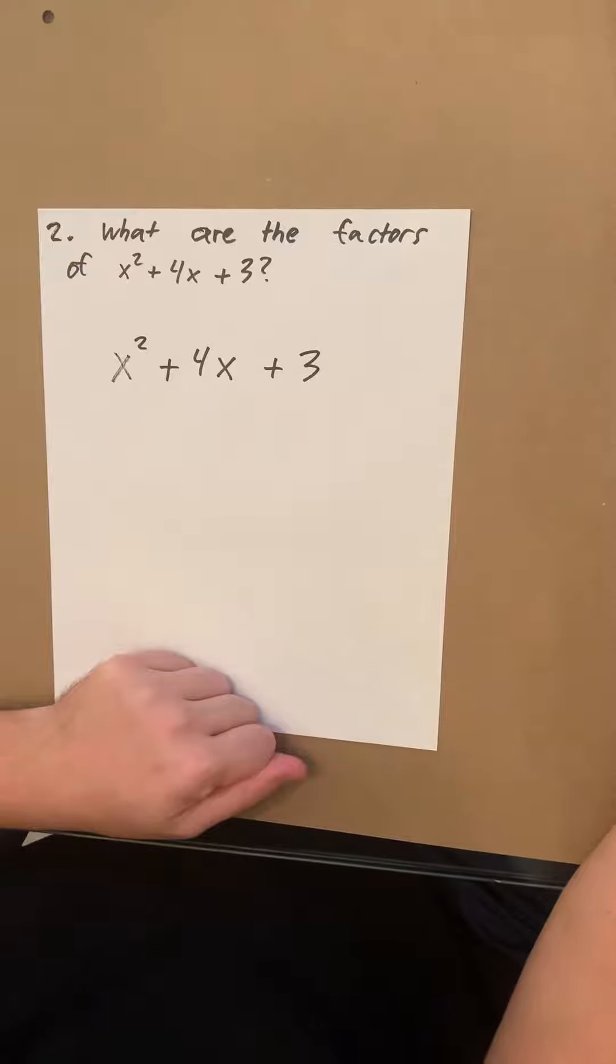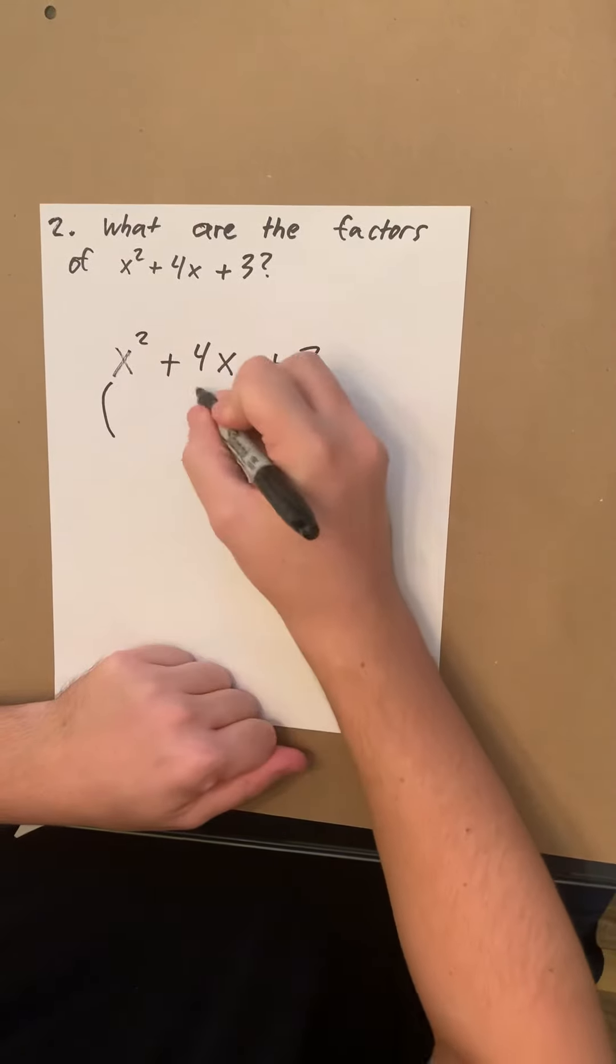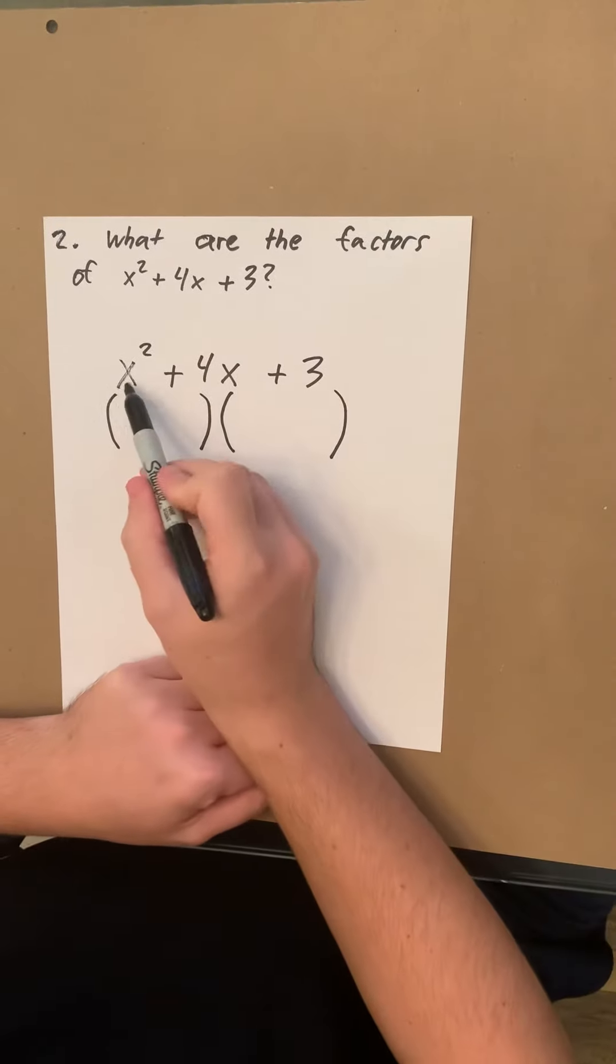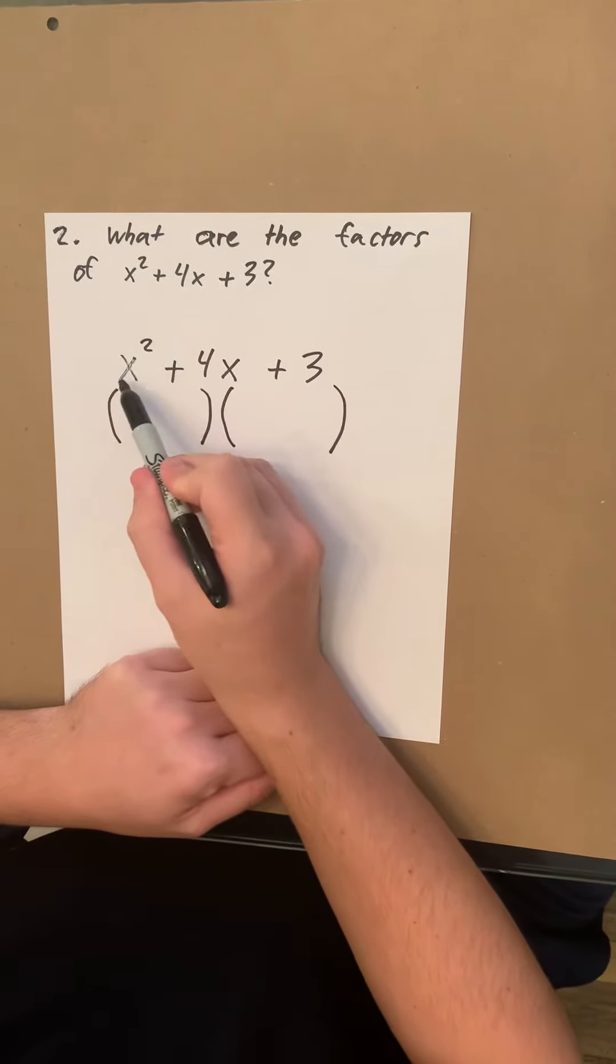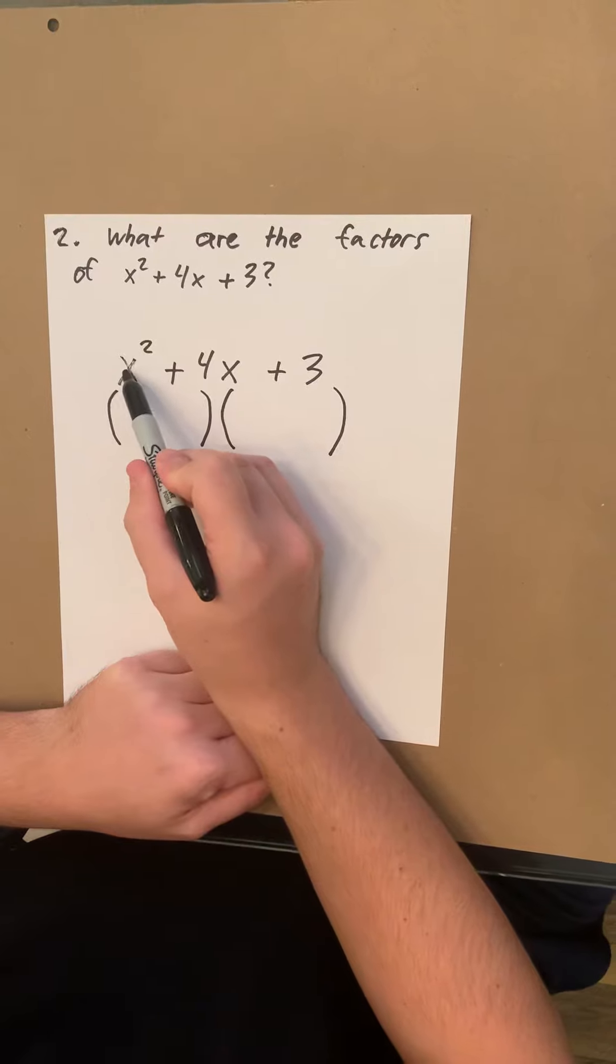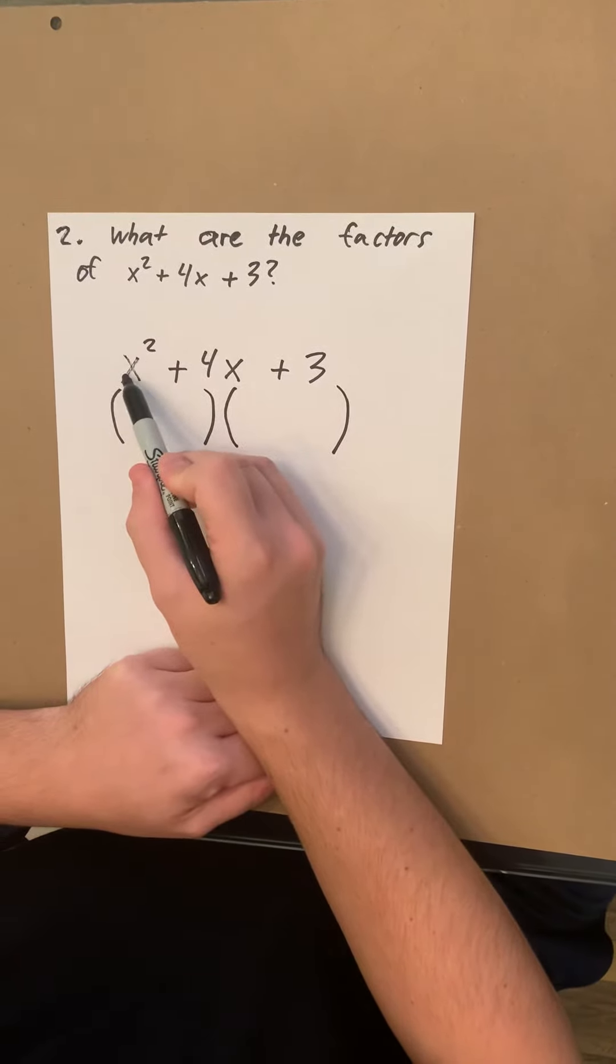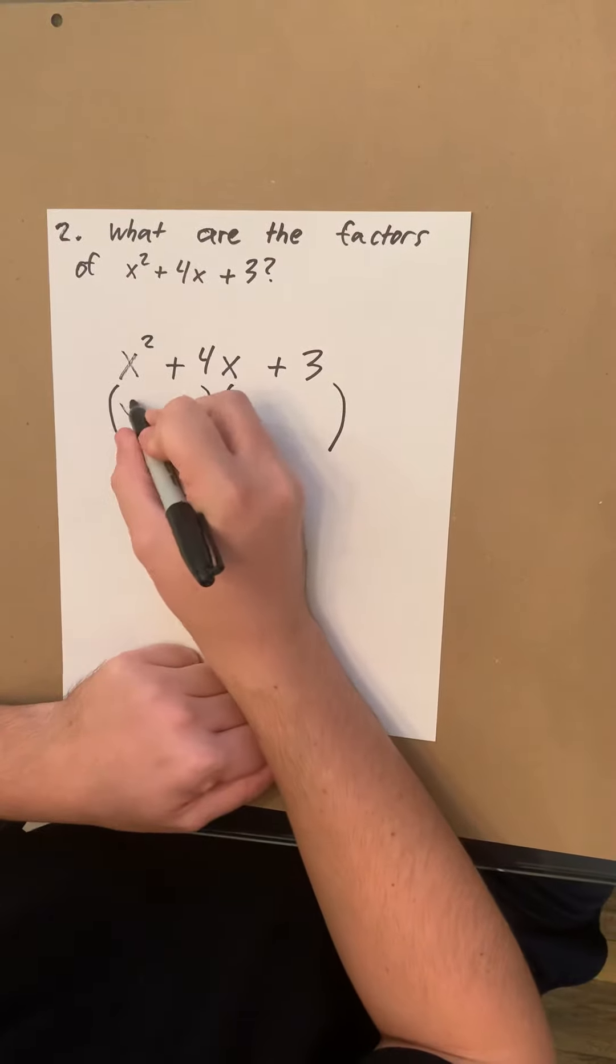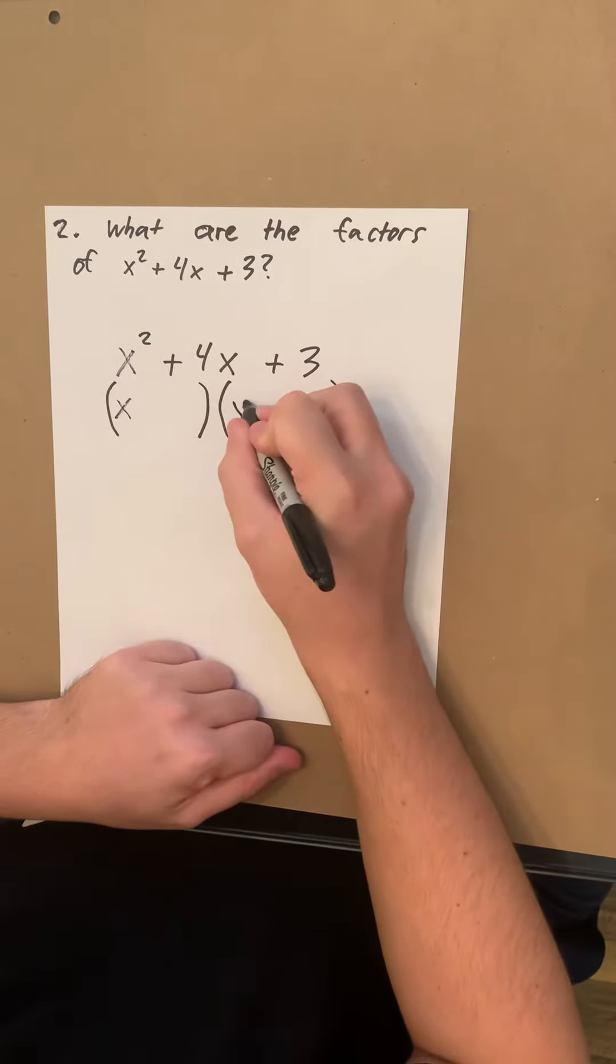When it comes to factoring you always want to start out with two empty parentheses. So for factoring you look at your first number and you see what did you multiply together to get this. Since x squared is only x times x, you put an x here and x here.